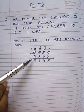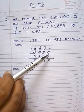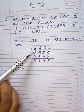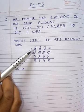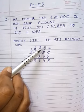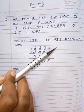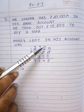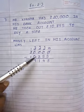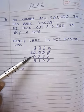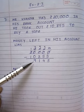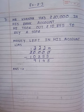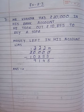So 20,000 minus 10,855. Here all the digits are 0, so start from 2 — cancel 2 to 1. Then cancel all the 0s: the first one becomes 10, cancel it to 9; similarly the second is 9, this one also 9, and the last one becomes 10. Now 10 is greater than 5, so 10 minus 5 is 5. 9 minus 5 is 4. 9 minus 8 is 1. 9 minus 0 is 9. So money left in his account was rupees 9,145. Write down the answer: money left in his account was rupees 9,145.